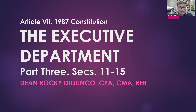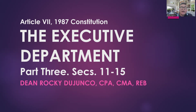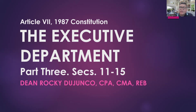The provisions of the executive department are contained in Article 7 of the 1987 Constitution. This is Part 3 of my lecture. To recap, in Part 1, what we learned is the nature of the executive power and upon whom it is vested. We also learned the qualifications of the President and Vice President — general principles about the executive department.